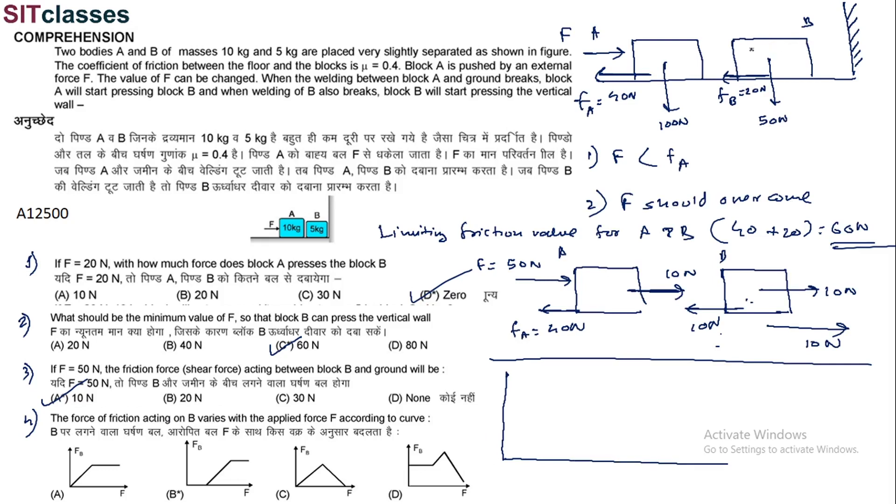Basically, as F value continuously changes, the force of friction acting on B. For B to have force applied on it, A has to leave its position and come press B. For A to leave its position, the minimum force required is 40 newton. From 0 to 40 newton, no friction force is working. From 40 newton, block A will move and touch block B. Then as we increase gradually, at 40 newton it just touches. The limiting value is 20 newton. So as we increase, when the next 20 newton comes, after that no matter how much we increase, the friction force will remain constant.